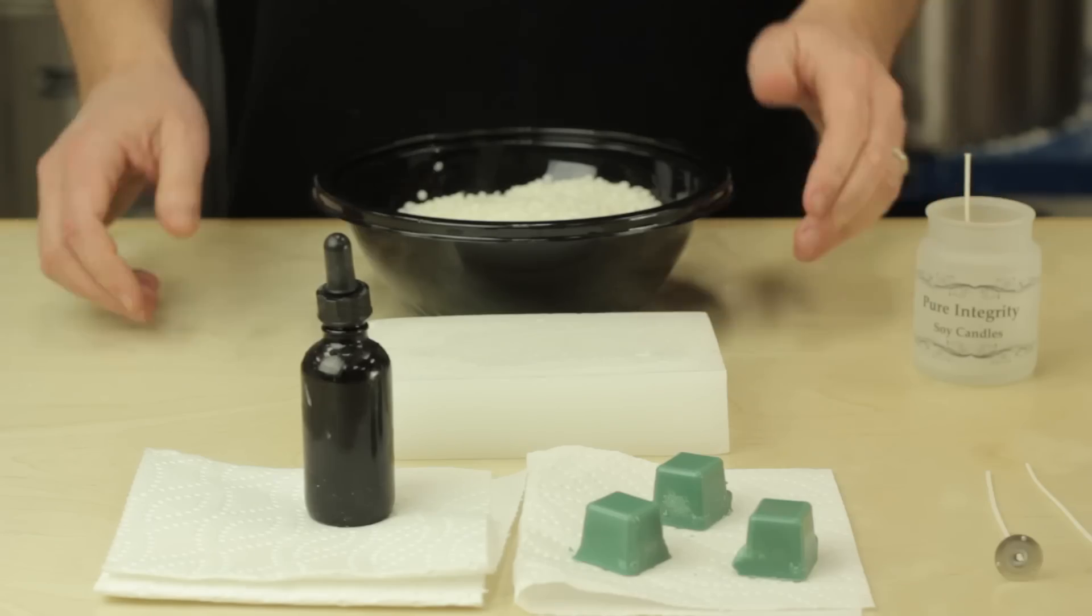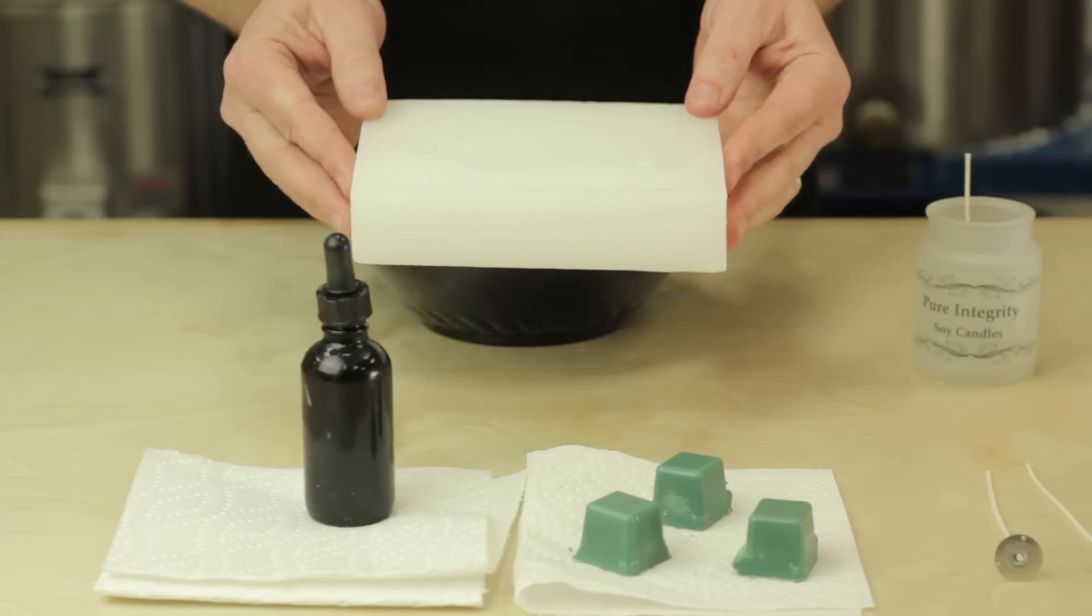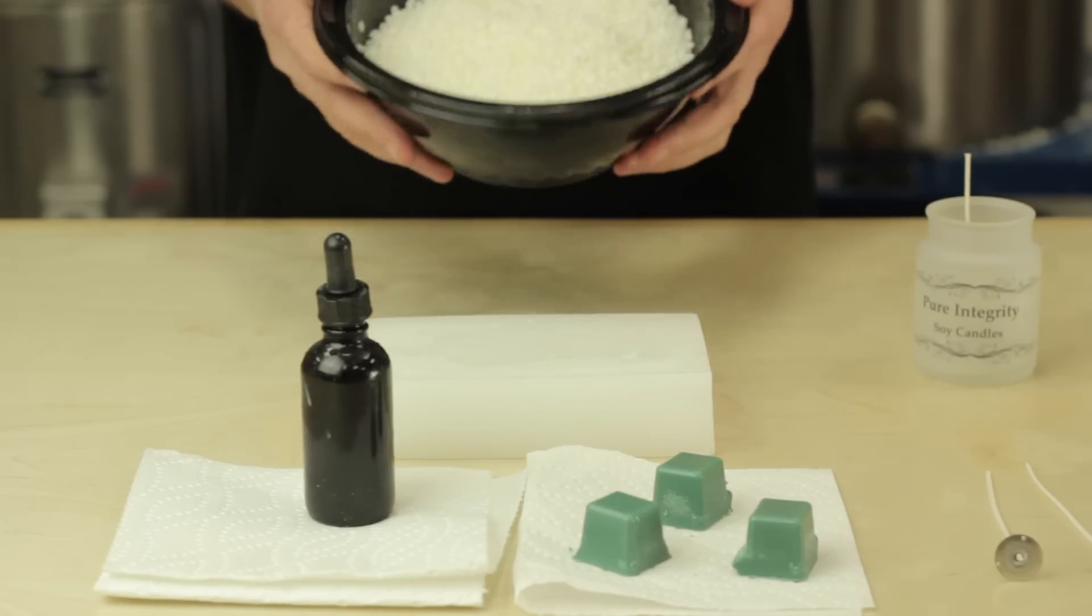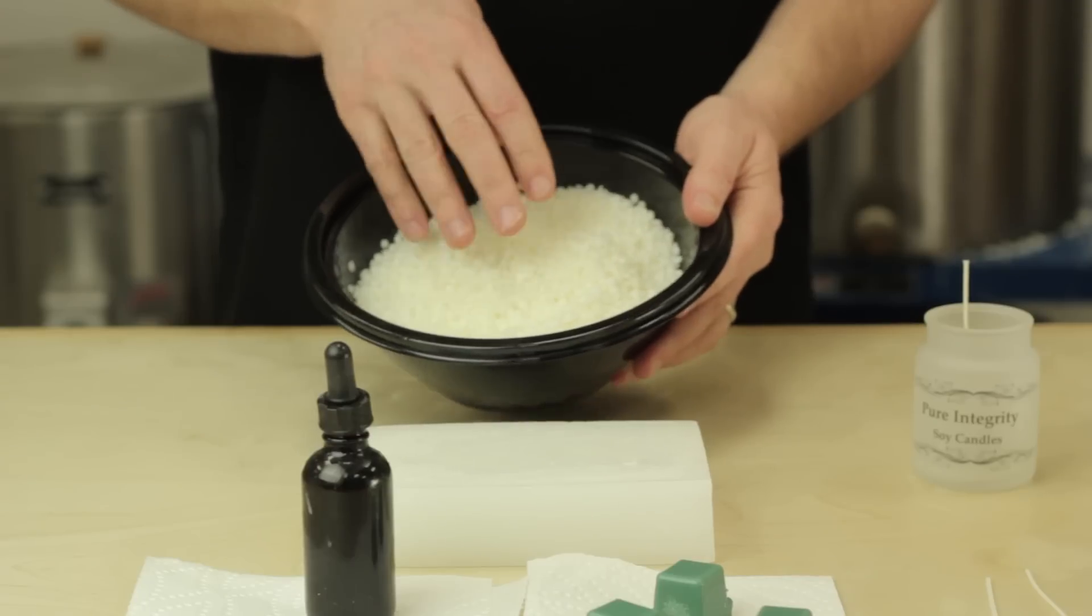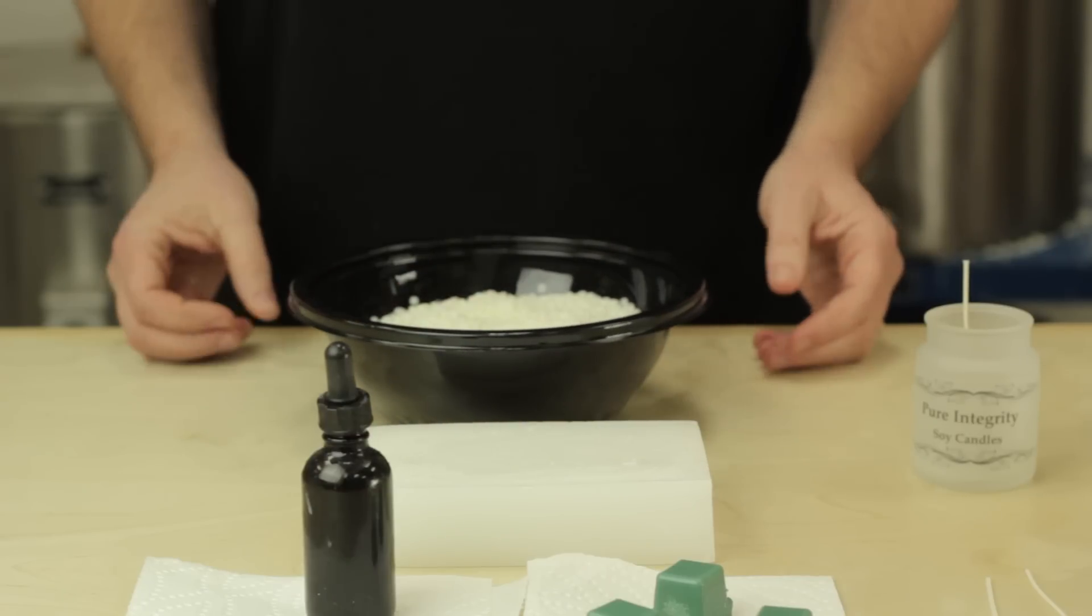I have two types of wax here. This block is paraffin wax. It's a petroleum derivative, and this wax here is soy wax. It's actually made from soybean oil. Now we at Pure Integrity Candles prefer to use soy wax, and that's what we're going to use today.